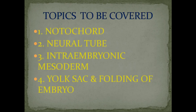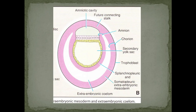We have to cover these topics: notochord formation, neural tube, intra-embryonic mesoderm, the yolk sac, and folding of the embryo. This diagram shows the two layers — columnar and cuboidal — the epiblast and hypoblast. Then is the formation of the splanchnopleuric and somatopleuric extra-embryonic mesoderm after the appearance of the extra-embryonic coelom.